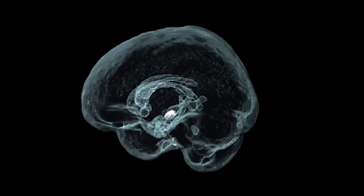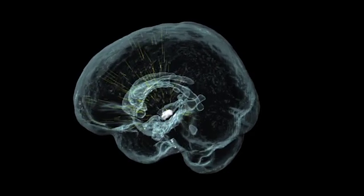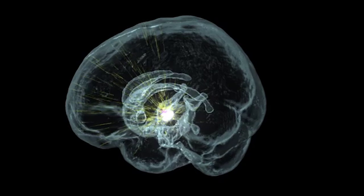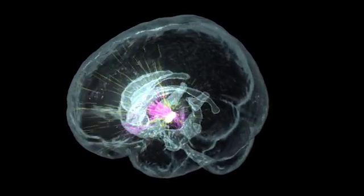At the center of these networks are midbrain dopamine nuclei. These nuclei receive inputs from diverse brain regions and distill those inputs into simple signals broadcast widely to influence brain function.